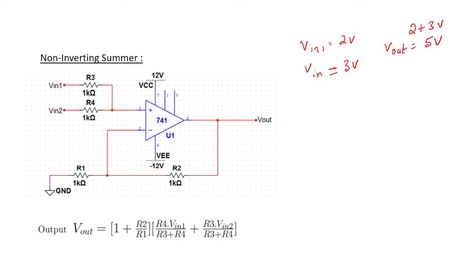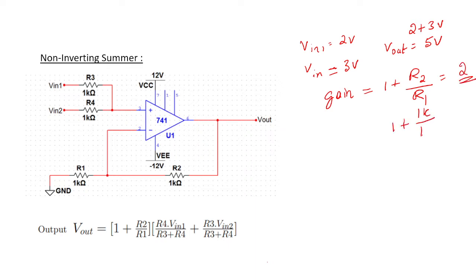Looking at the equation, 1 plus R2/R1 is the gain. The resistor values are equal — both 1k — so the gain is 1 plus R2/R1 which equals 2. So the gain is 2, and Vout equals 2 times the summed input voltages.